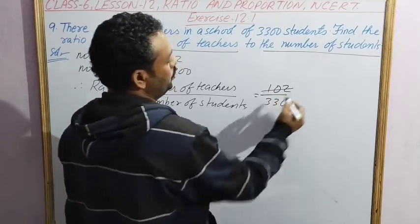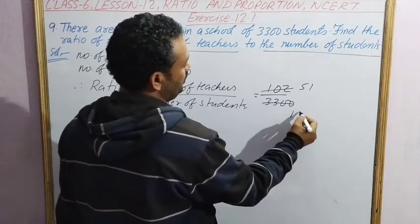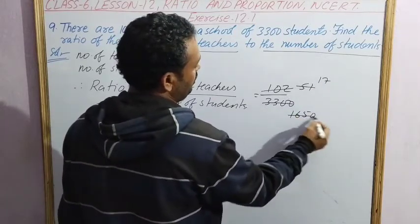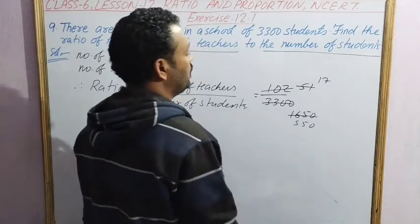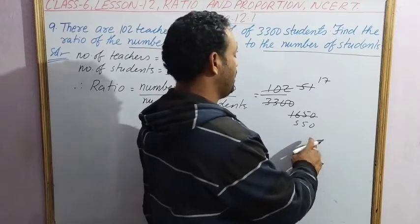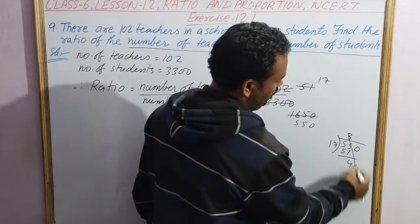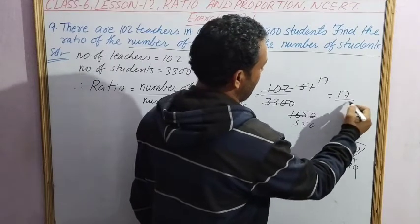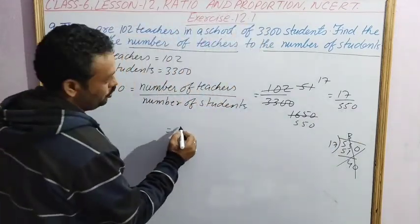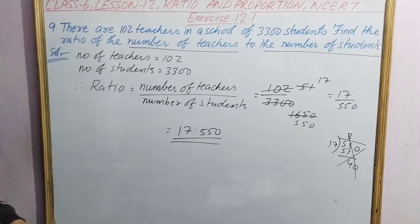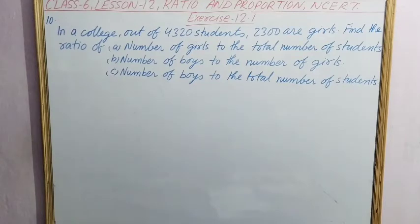So we will take 102 by 3300. Divisible by 2: 51 over 1650. Divisible by 3: 17 over 550. It is not divisible by 17, so the ratio will be 17 by 550. That is, the ratio will be 17 is to 550. This is the ratio of teachers to students.